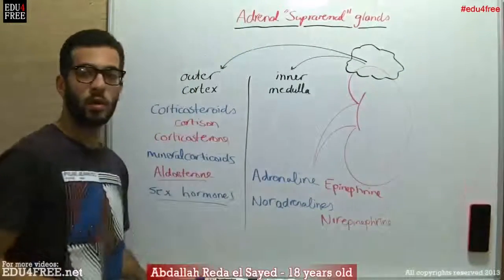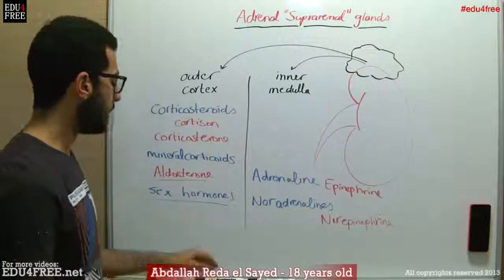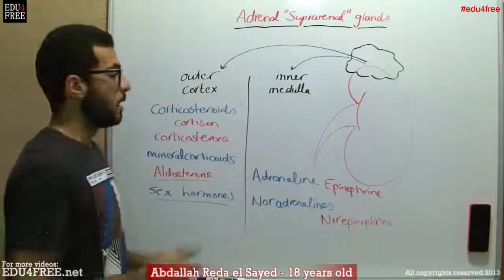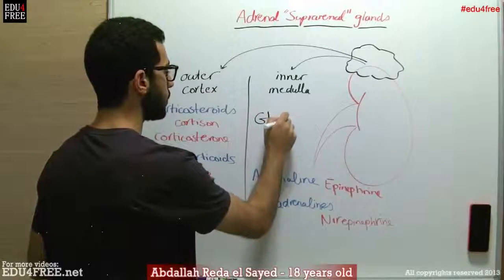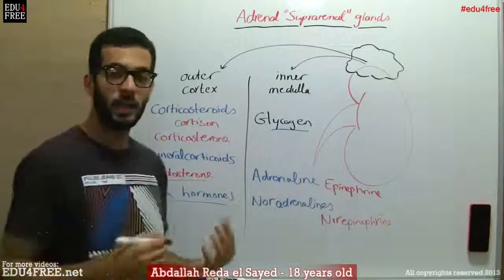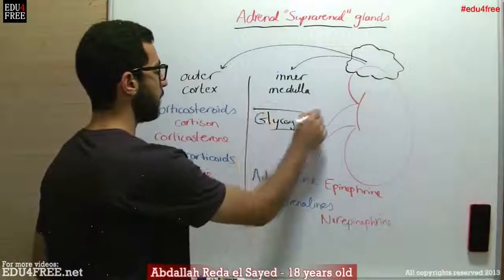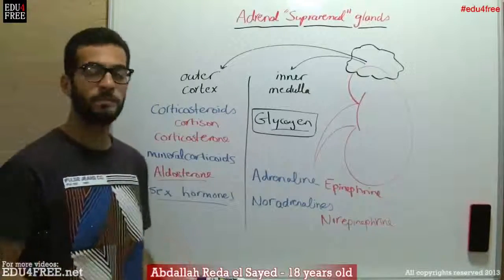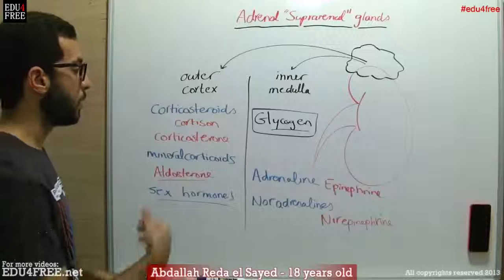These two hormones help the body throughout sudden states of fear, fight, and excitation. This is done through increasing the glucose level in the blood by increasing the breakdown of glycogen. Glycogen is stored in the liver and muscles, and when the body needs extra glucose, this glycogen is broken down into glucose. Accordingly, the burning processes in the human body increase, more oxygen is used up, the respiration rate increases, and the blood pressure increases too.